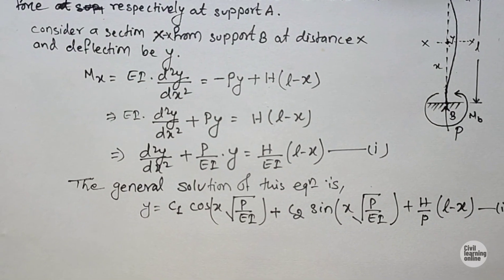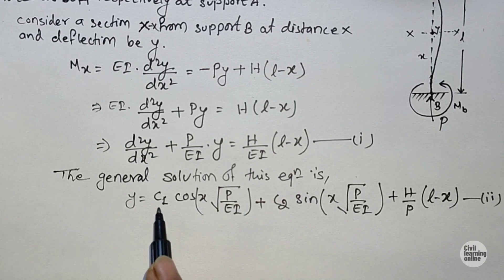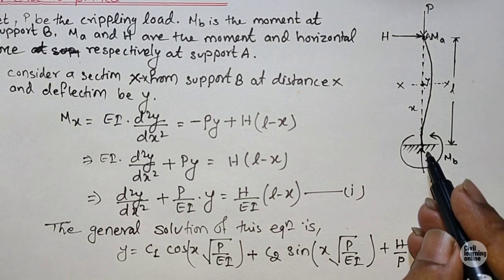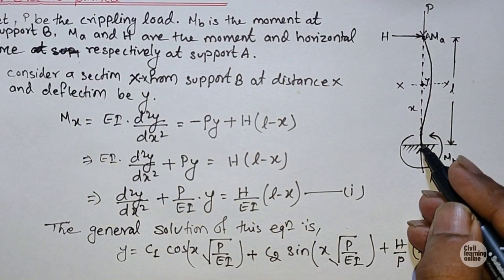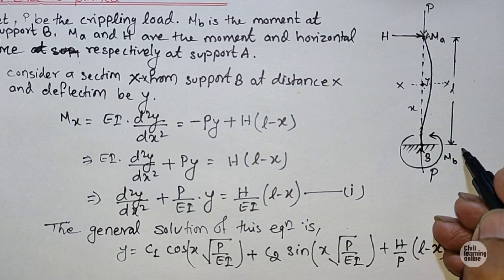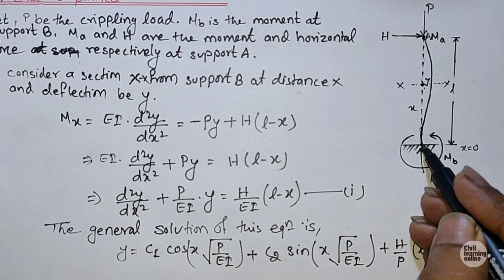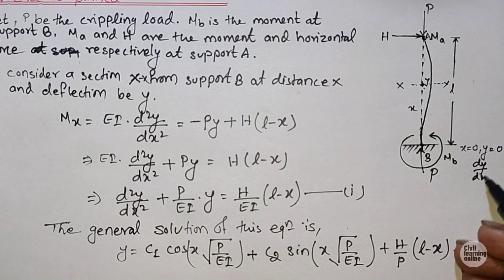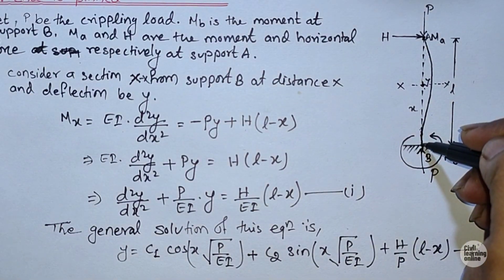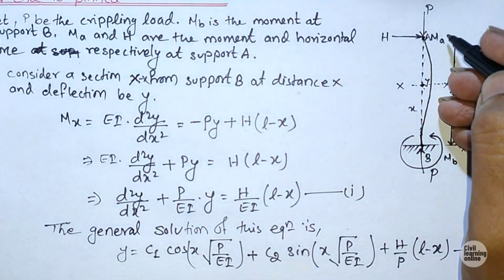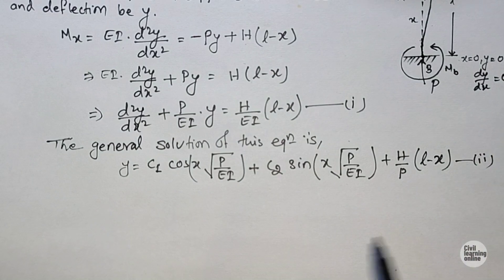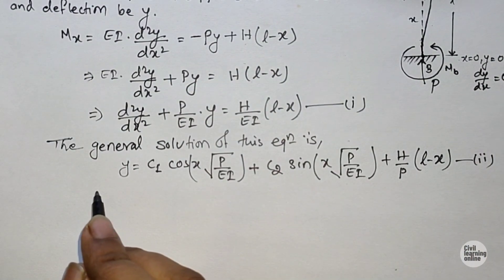C₁ and C₂ are integration constants. We find their values using boundary conditions. At support B (fixed), x = 0, y = 0, and dy/dx = 0. At support A (pinned), x = L and y = 0. Since dy/dx = 0 at x = 0, we differentiate Equation 2 with respect to x.